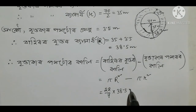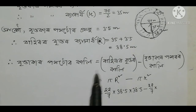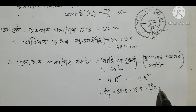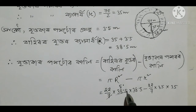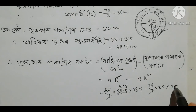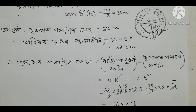Pi times 22 by 7: 38.5 into 38.5 minus pi times 22 by 7 times small r. Small r equals 35. So 35 into 35. Small r is 35. Then: 22 by 7 times 38.5 times 38.5 gives 4658.50.